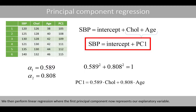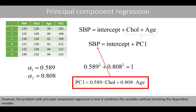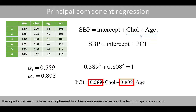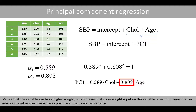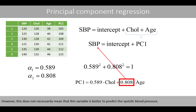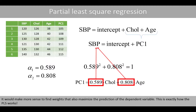We then perform linear regression where the first principal component represents our explanatory variable. However, the problem with principal component regression is that it combines the variables without involving the dependent variable. These particular weights have been optimized to achieve maximum variance of the first principal component. The variable with the higher weight gets more emphasis when combining the two variables, but this does not necessarily mean that this variable is better to predict the systolic blood pressure. It would make more sense to find weights that also maximize the prediction of the dependent variable.